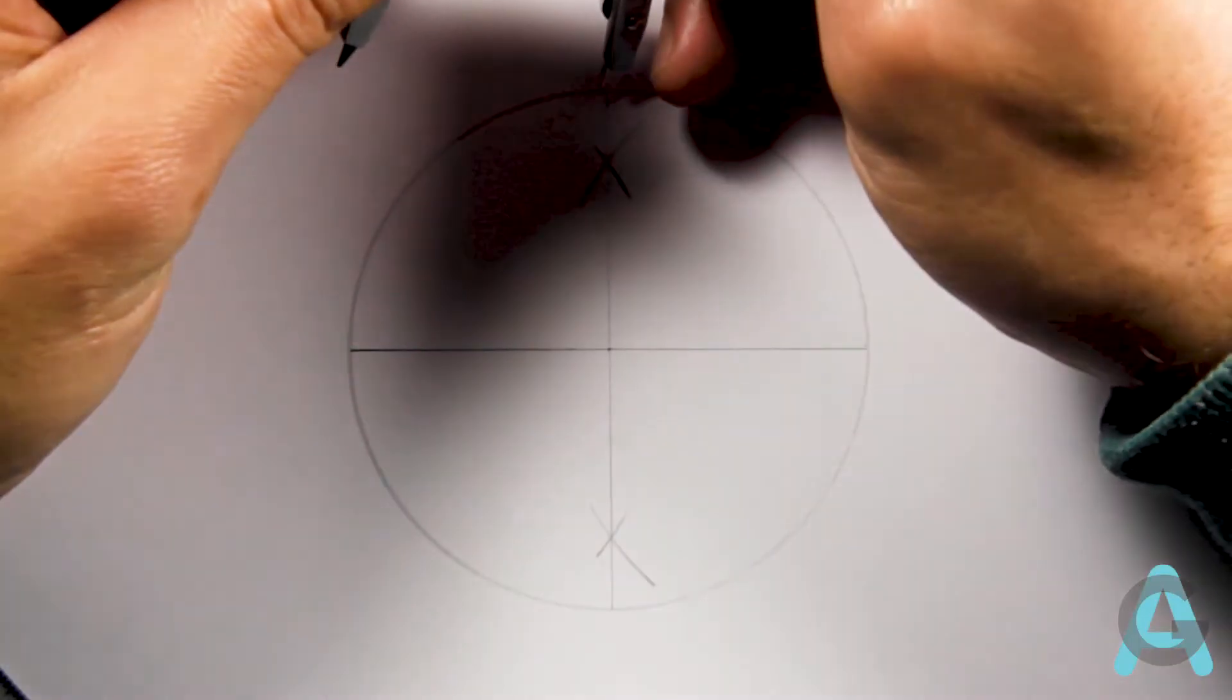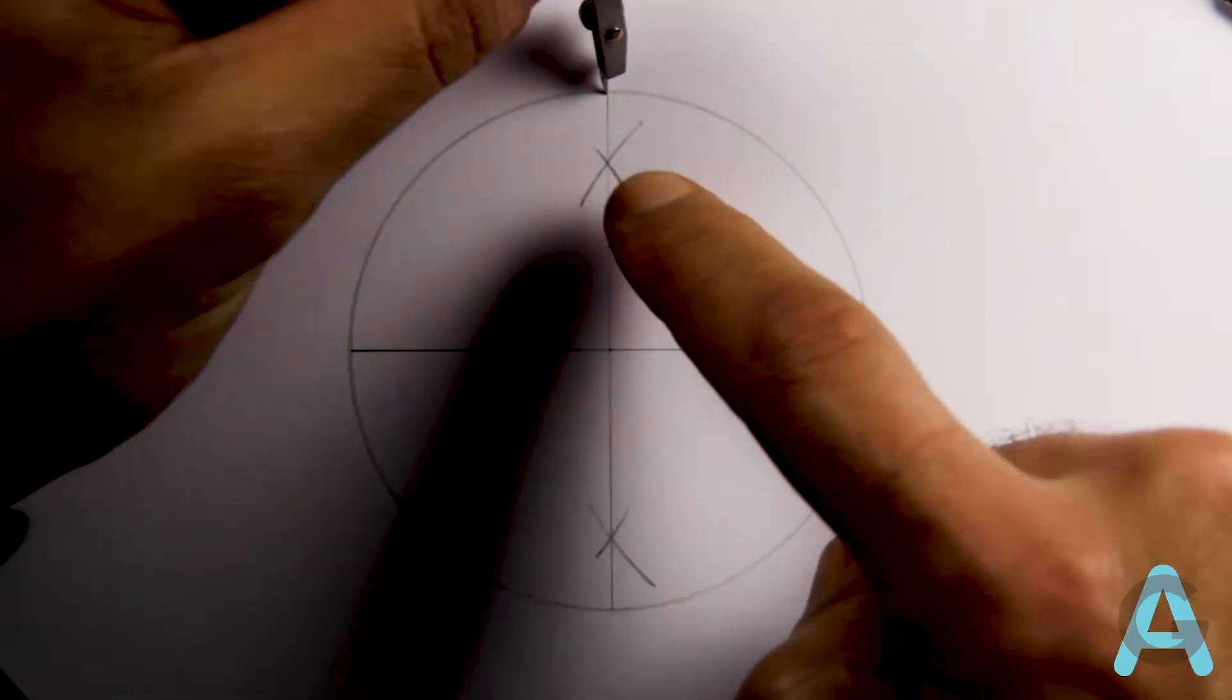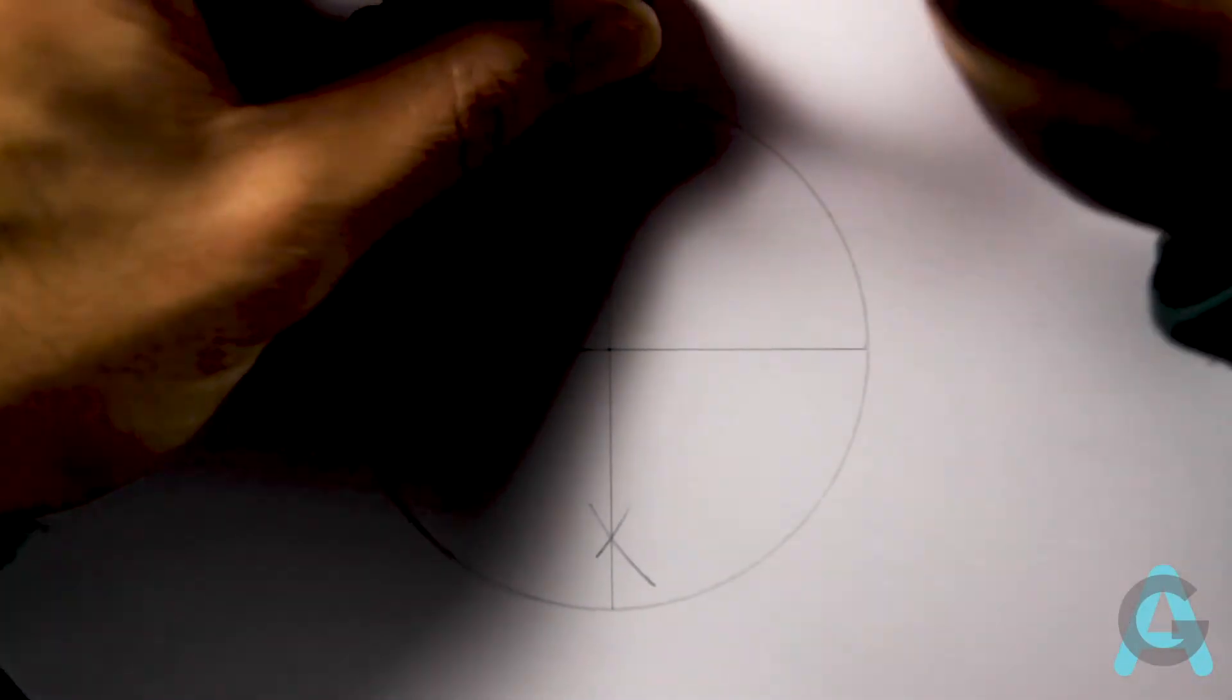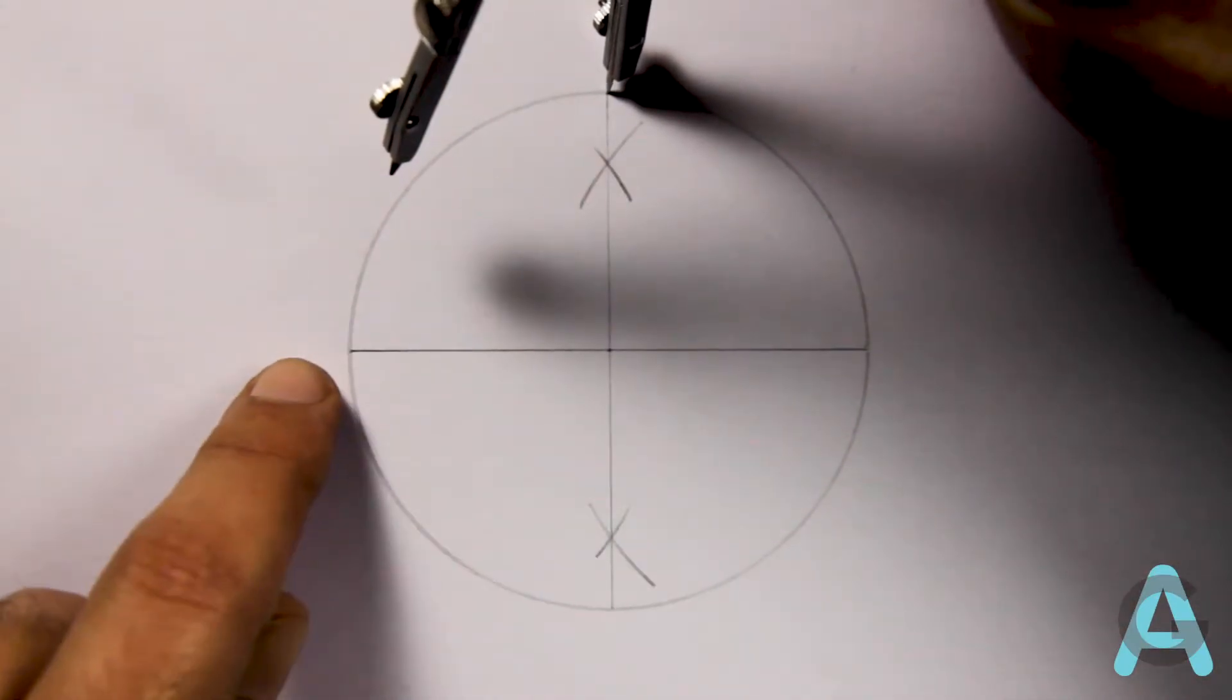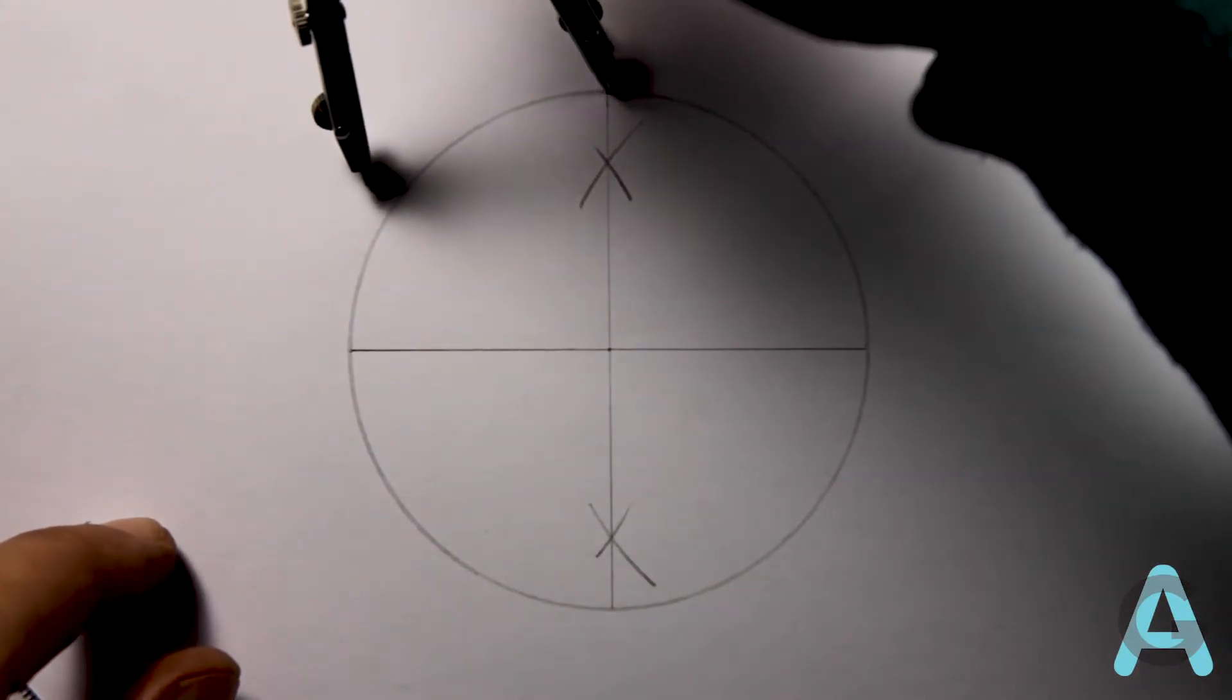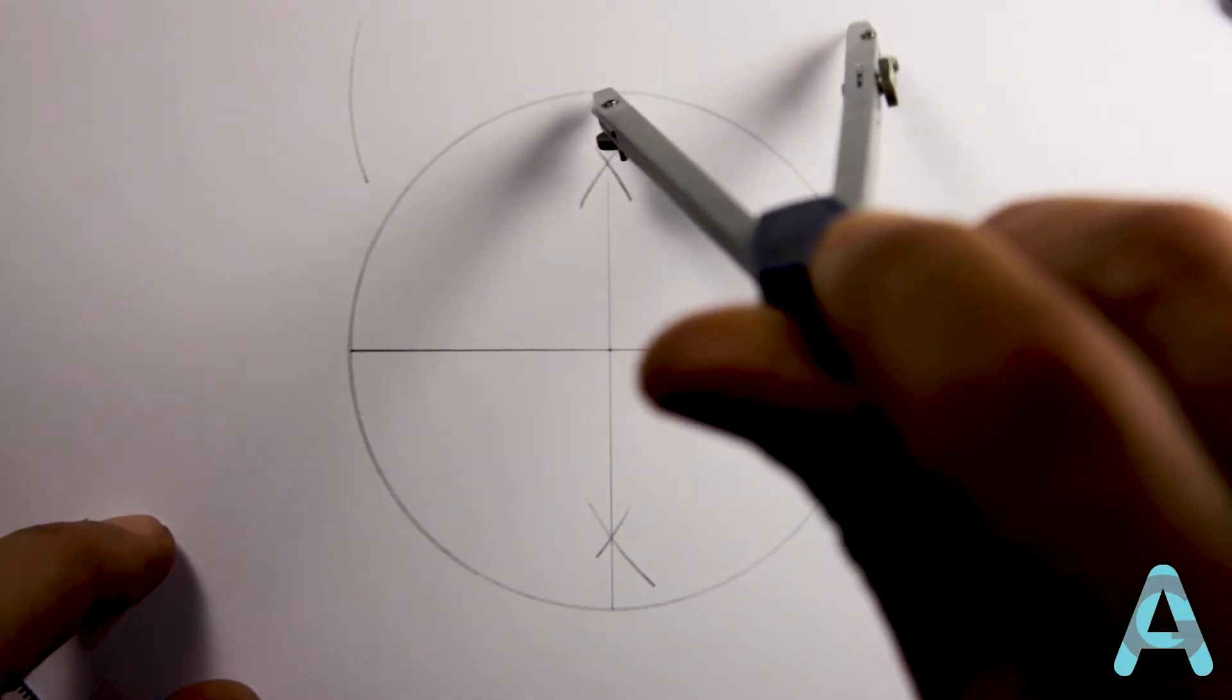To do that, we'll open our compass more than half the length of this arc between these two lines. We'll put the needle in this point. With the compass opened more than half of this arc, we'll do a little arc. Without lifting the needle, we do an arc at the opposite side.